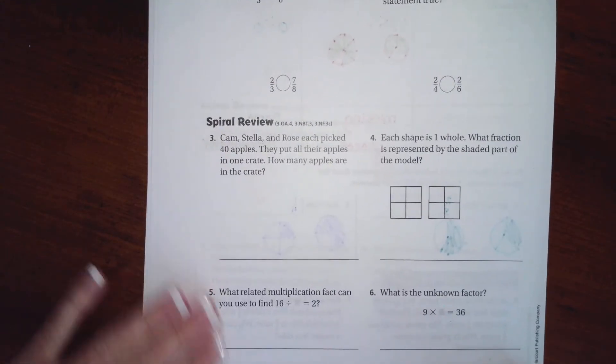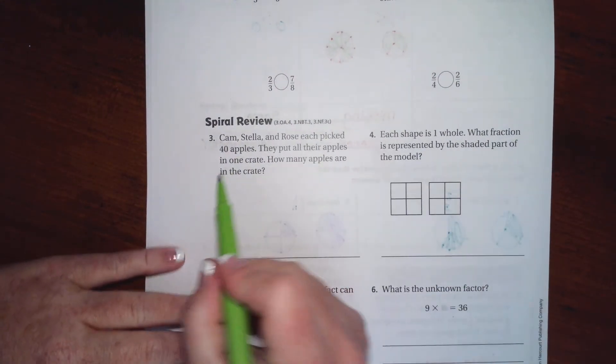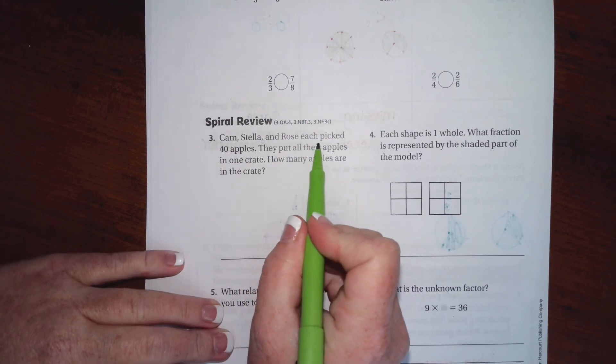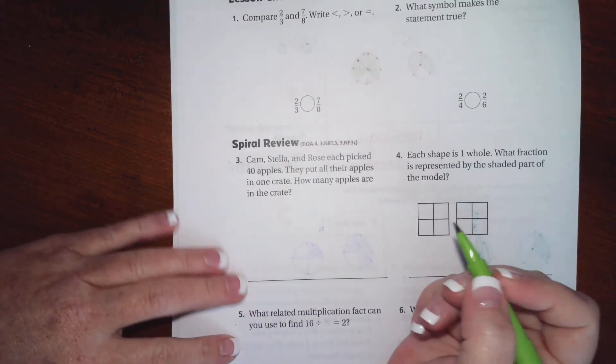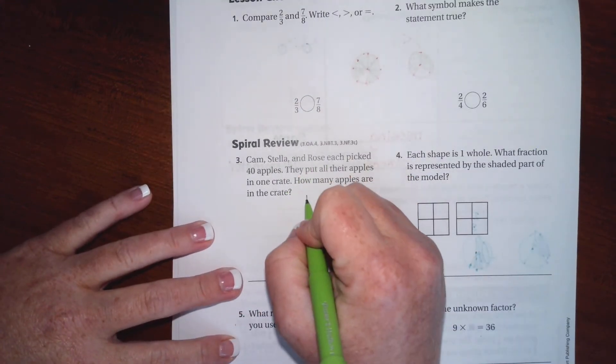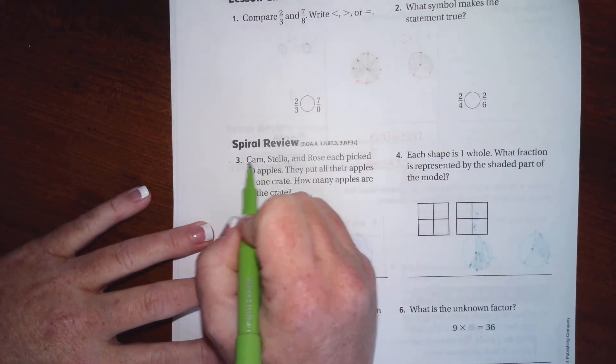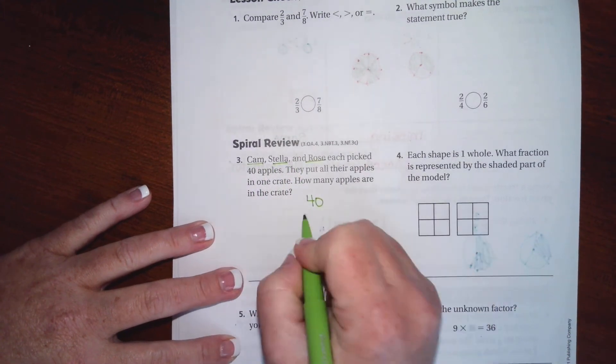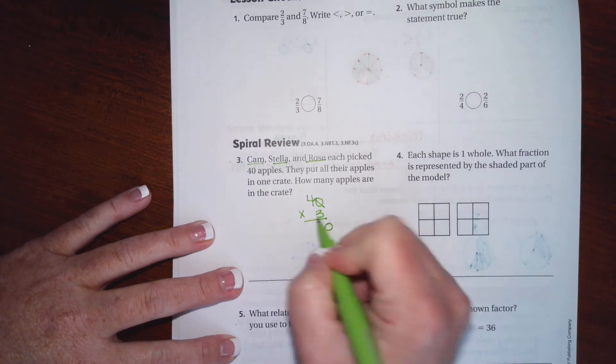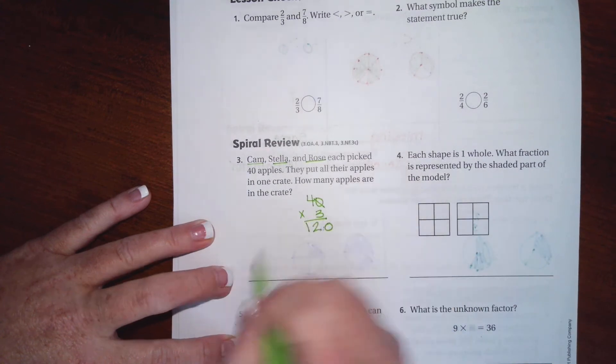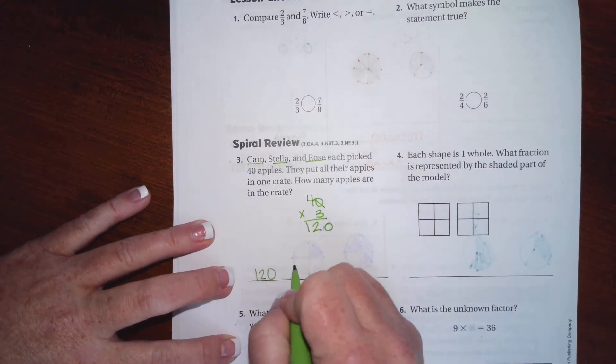We're going to go down to the spiral review. It says Kim, Ellen, and Rose each pick 40 apples. They put all their apples in one crate. How many apples are in the crate? Each of them pick 40 and there's three people, so I'm going to take that zero times the end, and then three times four is twelve. So 120 apples.